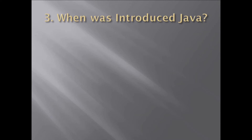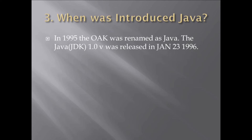The third question is: when was Java introduced? Some people say 1990, 1991, some say 1995. But actually, Java was introduced in 1995 — Oak was renamed as Java in 1995. The first version, JDK 1.0, was released on January 20th, 1996.